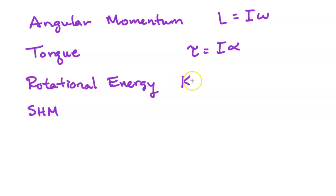Another example would be rotational energy. K_rot equals one-half times the moment of inertia times the angular velocity squared. And then we have simple harmonic motion where the angular frequency equals 2π over the period.